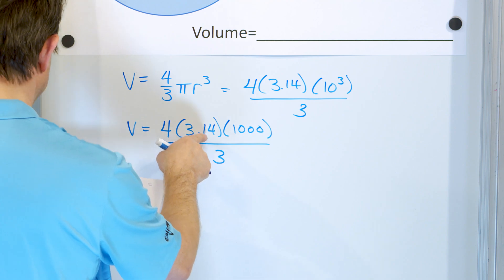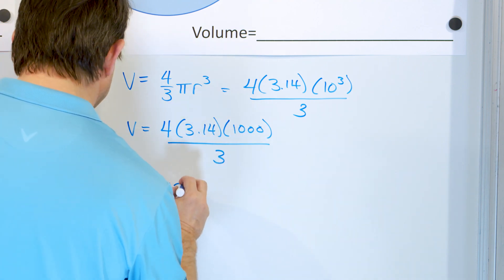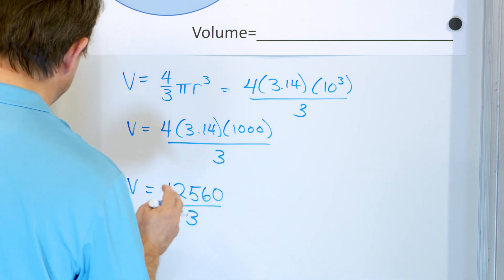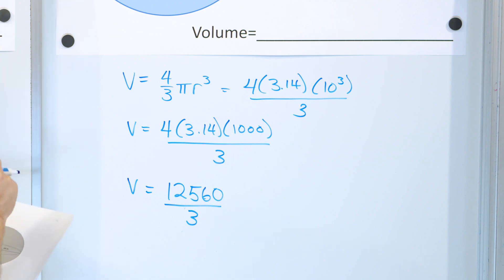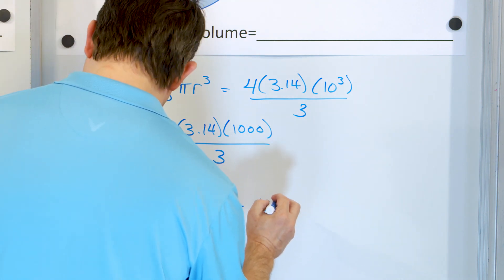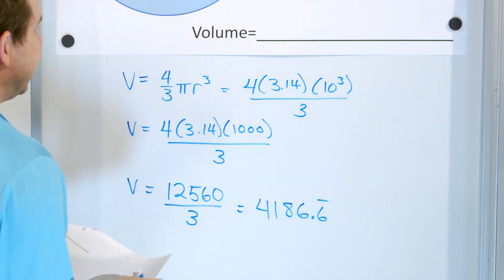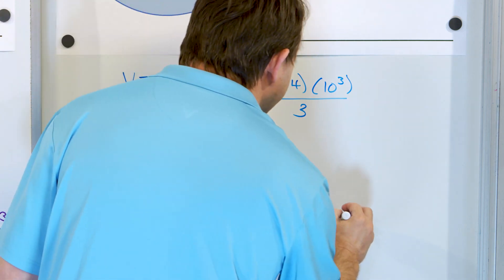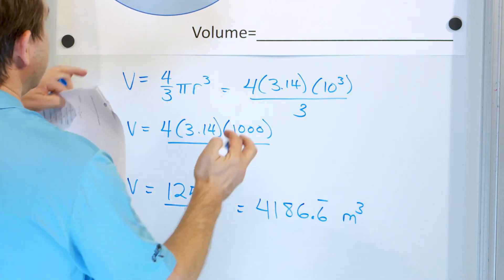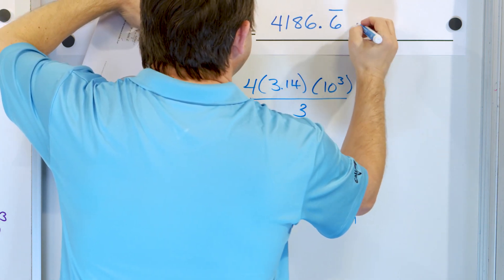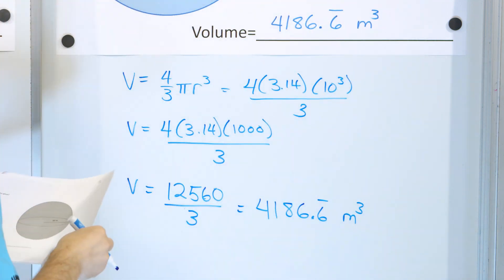So on the top, four times 3.14 times 1,000 works out to be 12,560, and we're dividing this all by three. Now when you take 12,560 divided by three, you get 4,186.6 with a repeating bar on the six. The units were meters here, so this is cubic meters. 4,186.6 repeating bar meters cubed. Alright, I have one more. We'll do our last problem.